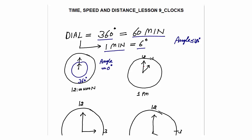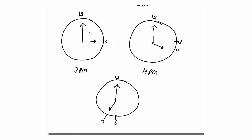Now look at 1 p.m. The gap between the hour hand and the minute hand is 5 minutes, because the hour hand is at 1 and the minute hand is at 12. The gap of 1 minute on the dial is 6 degrees, so a 5-minute gap converts to 5 × 6 = 30 degrees. So at 1 p.m. the angle between the hands of the clock is 30 degrees.